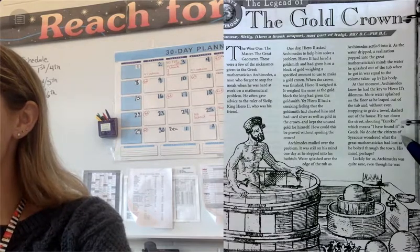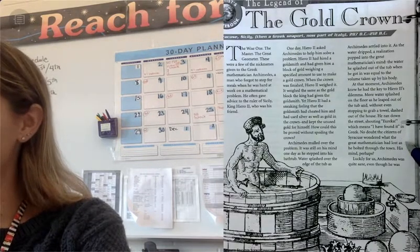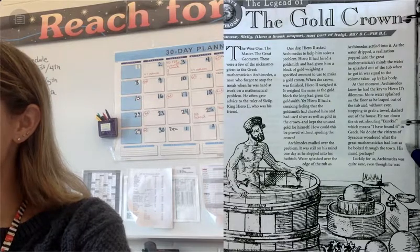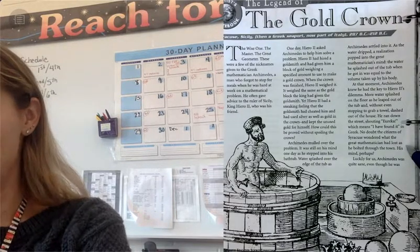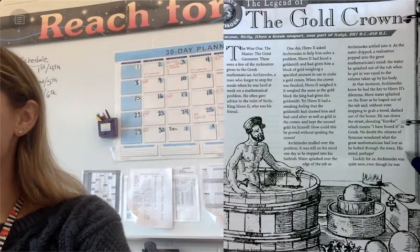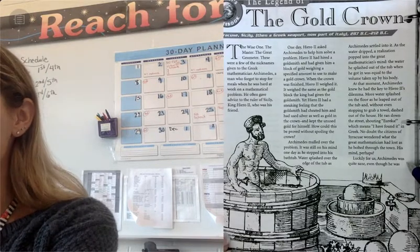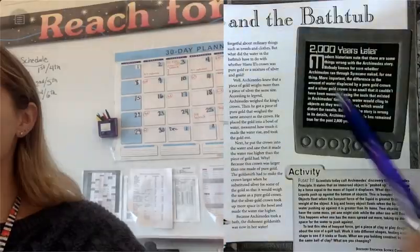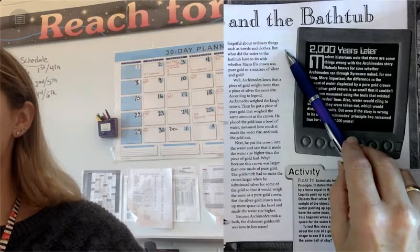No doubt, the citizens of Syracuse wondered what the great mathematician had lost as he had bolted through the town. His mind, perhaps? Luckily for us, Archimedes was quite sane, even though he was forgetful about ordinary things, such as towels and clothes.